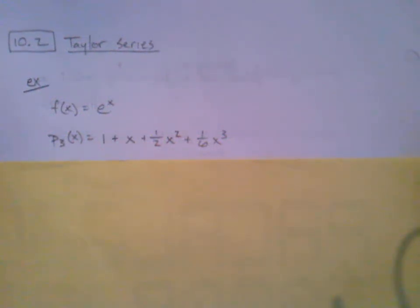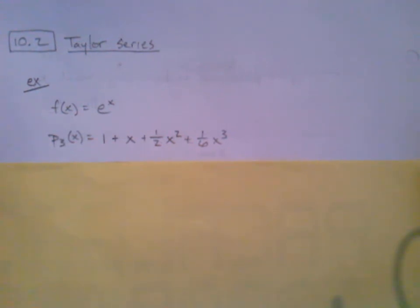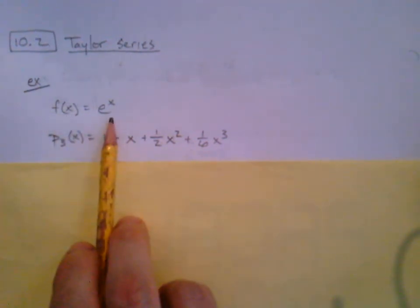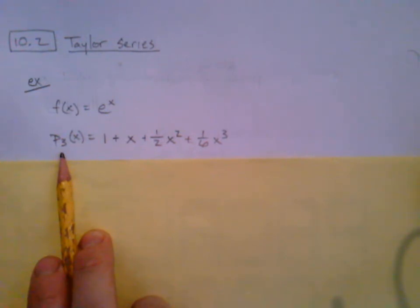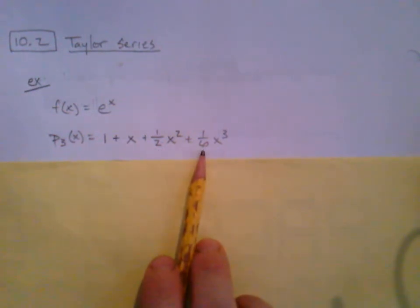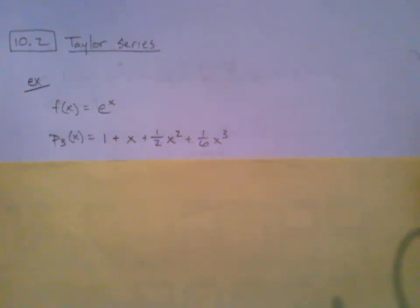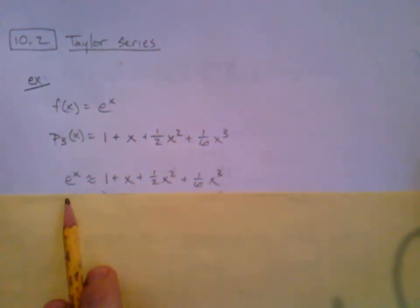In section 10.2 we look at Taylor series — when we say series, it's implied that we mean infinite series. We're going to take the idea of the Taylor polynomial and go infinite with it. For example, at the beginning of 10.1 we looked at f(x) = e^x, took derivatives through the whole procedure, and found the third degree Taylor polynomial: 1 + x + (1/2)x² + (1/6)x³. So e^x can be approximated by that third degree Taylor polynomial.